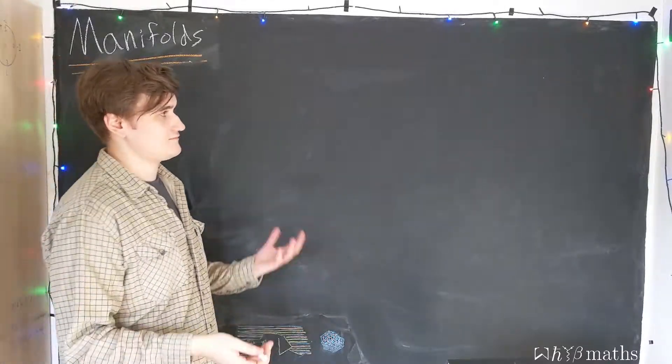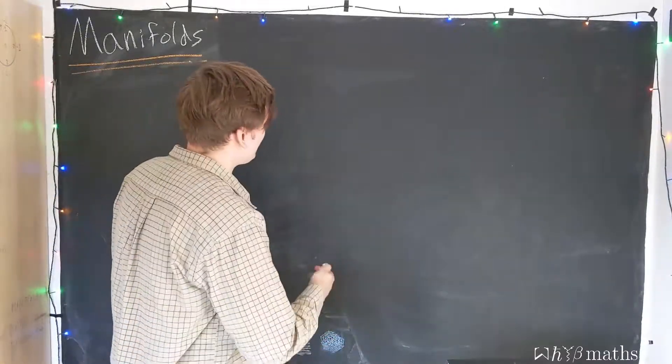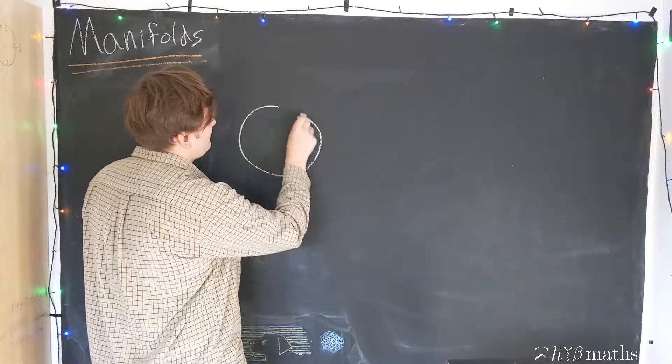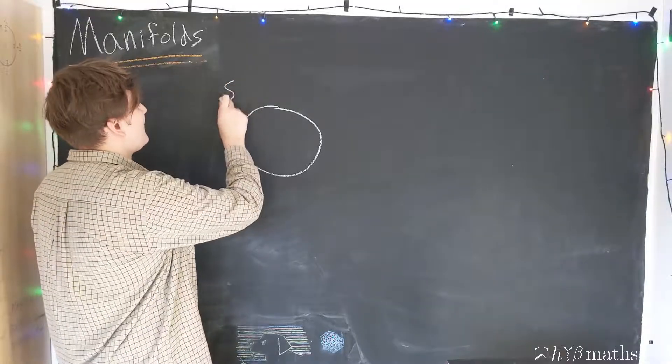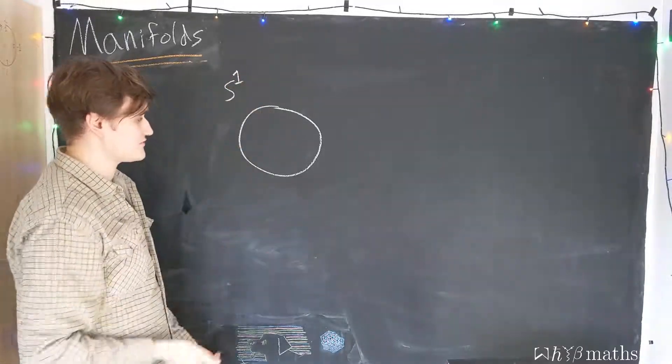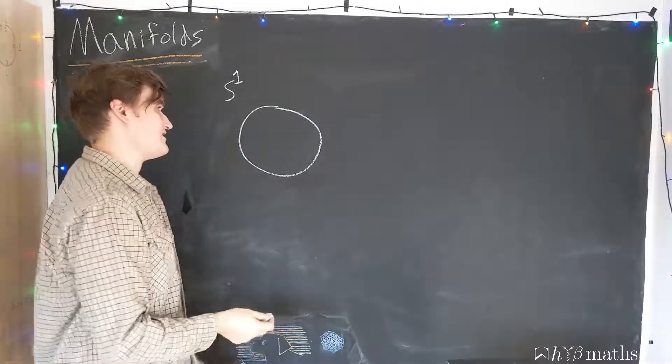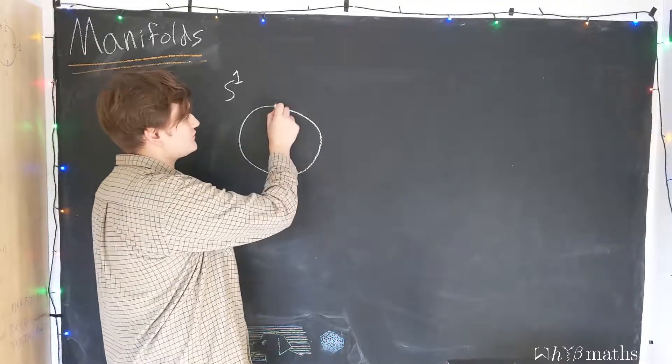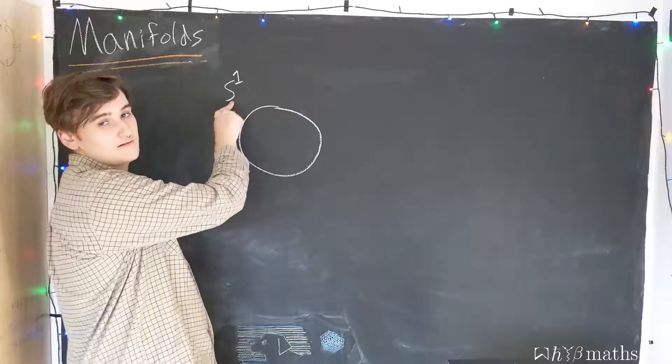So, what is a topological space, first of all? Well, we know a few examples. So, the circle, or S1, is a topological space. What do we mean by this? Well, we mean all of the points that are on this circle lie in the set S1.